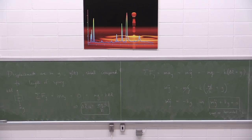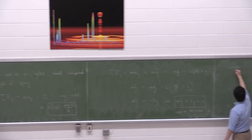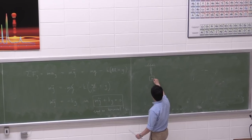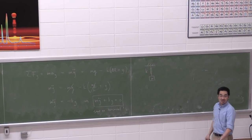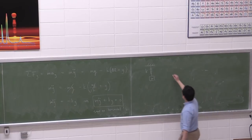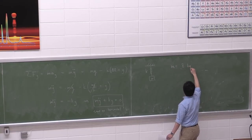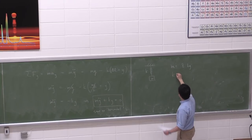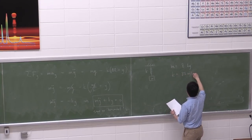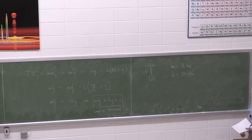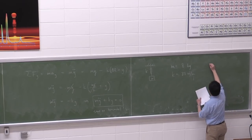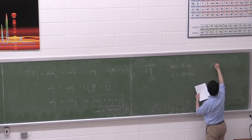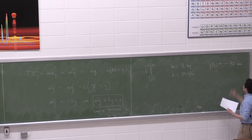We did one example last class already putting in some numbers. Let's do another example, because we just need to keep practicing to gain more familiarity. I'm going to do my typical single mass, single spring system and give you all the information. I have mass m, spring constant k, and then initial conditions: y(0) equals negative 90 millimeters — so that's my initial displacement. The downward direction is positive in my diagram, so this is actually a push up — I've compressed the spring upward by 90 millimeters.